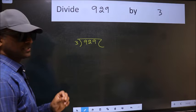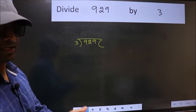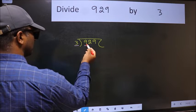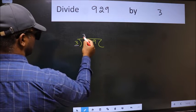This is your step 1. Next, here we have 9 and here 3. When do we get 9 in the 3 table? 3 times 3 is 9.